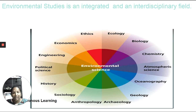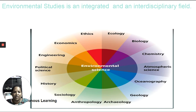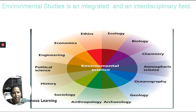Ecology studies how an organism actually interacts with the environment. For example, certain species of plants live in a desert region or a tundra region — how they interact with their environment for survival. That is what we call ecology, and it is very much interlinked with biology.